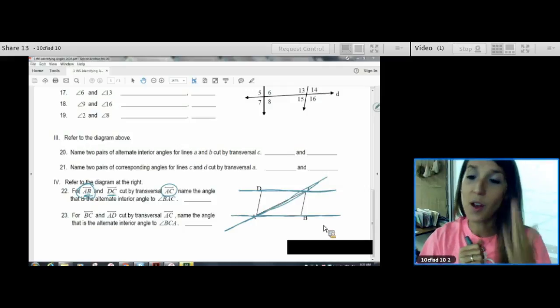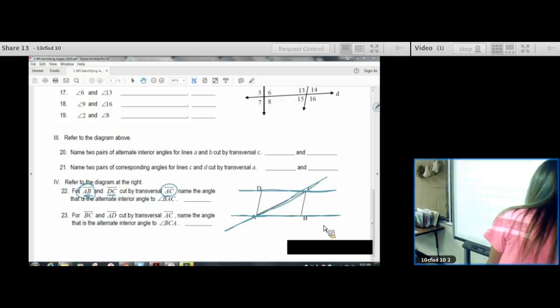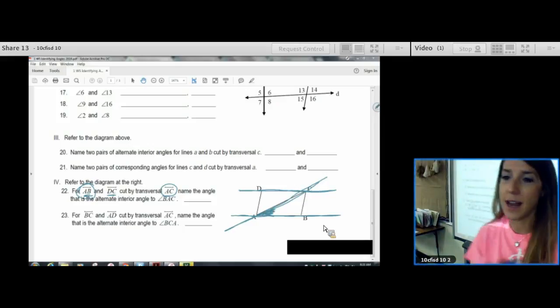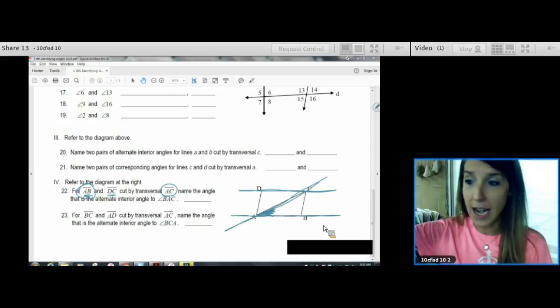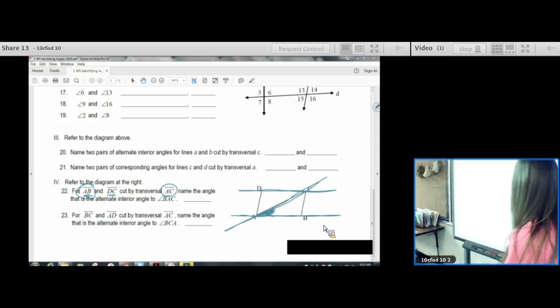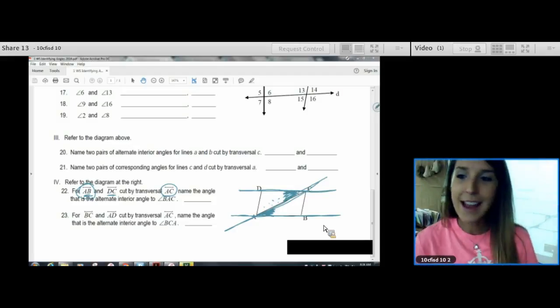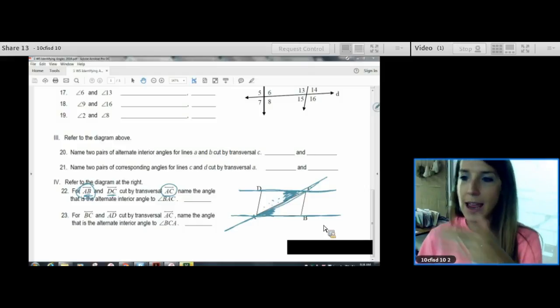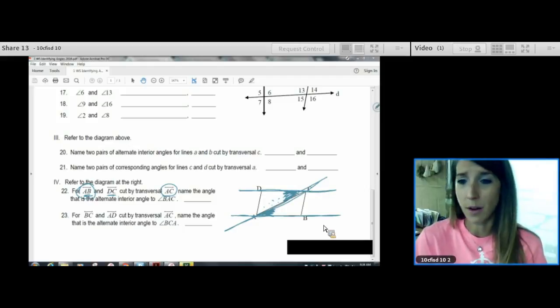Name the angle that's alternate interior to BAC. So, follow the letters B, A, C in this angle right here. And I want to name the one that's alternate interior. So, go to the alternate side of your transversal. Go to the alternate side somewhere here. And stay interior. Alternate interior. Now, we know which angle it is. Now, we have to name it with three letters. We can call it DCA or ACD. So, this one was a little bit harder just because you had to use the three letters instead of just a number.